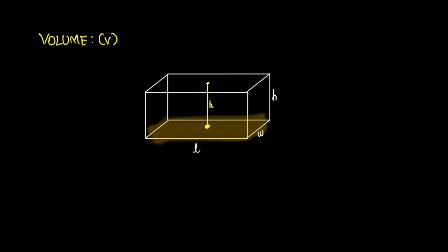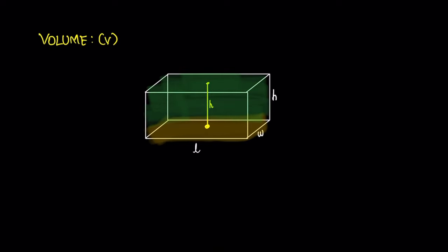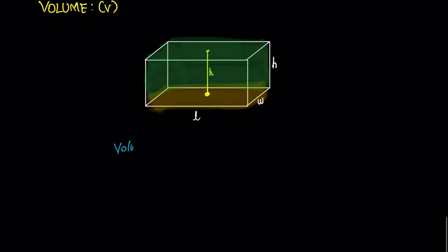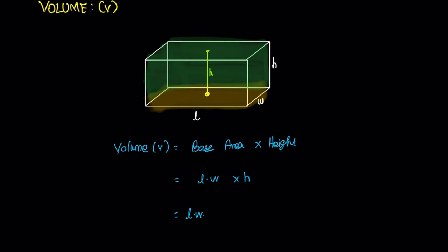Volume of a cuboid is just the base area multiplied by the height. The base is length times width, and if you multiply it by height you get length, width, and height. So volume is equal to base area times height, which gives us V = L × W × H.